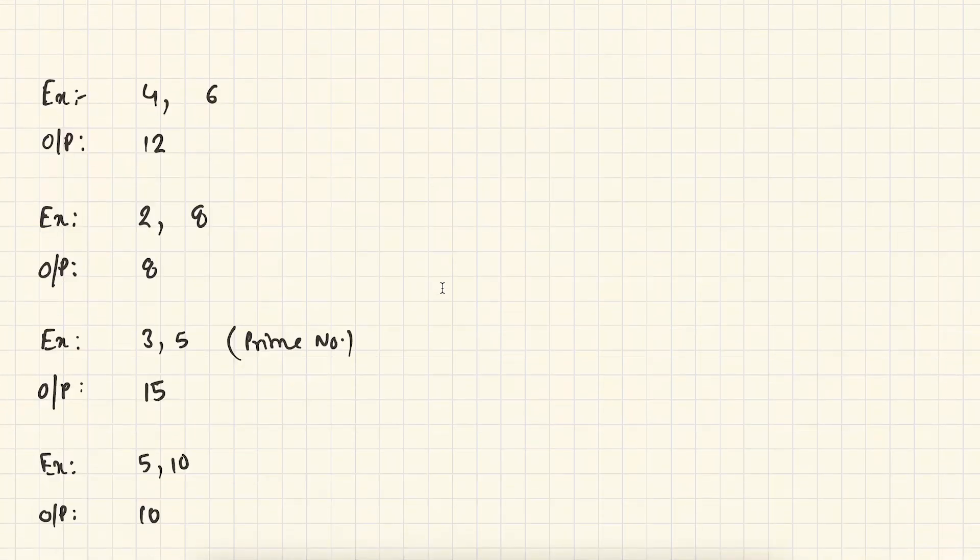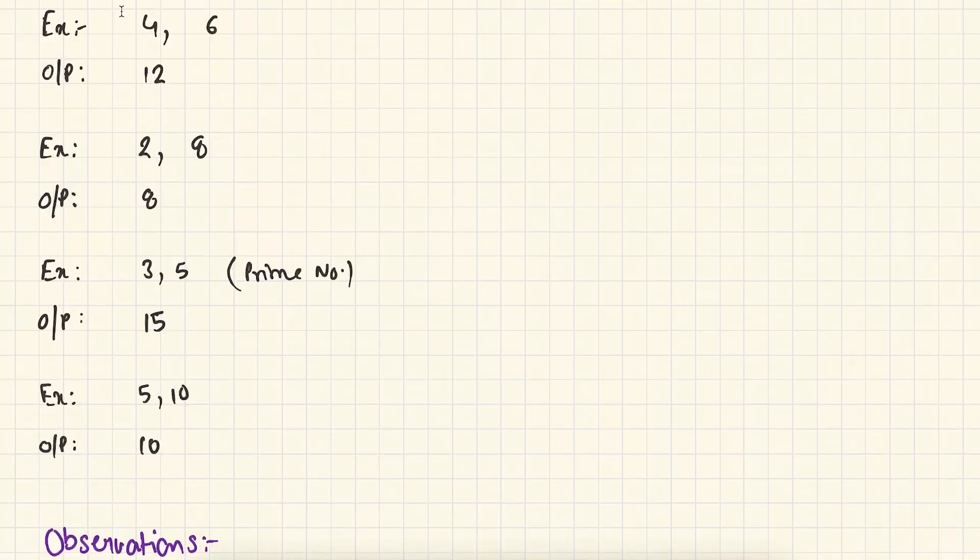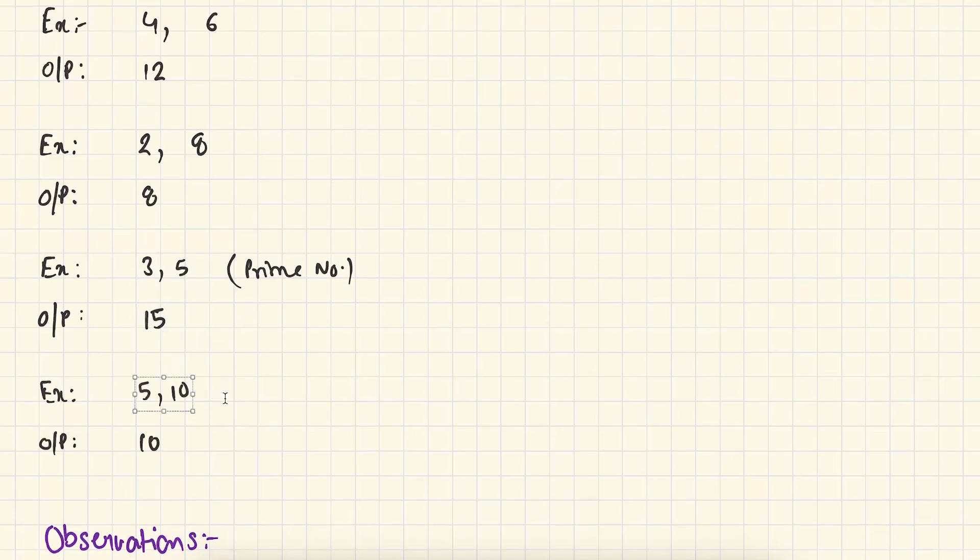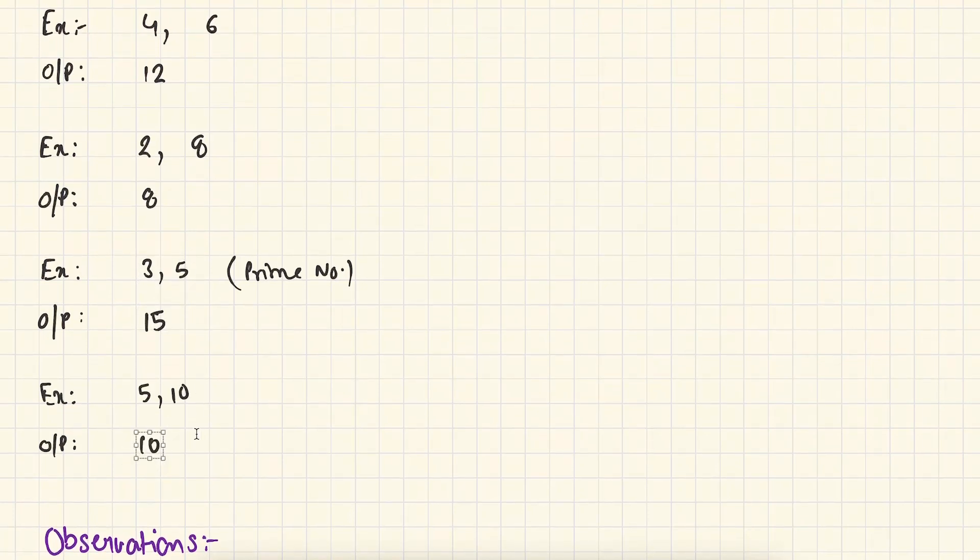Let's see a few more examples. The LCM of 4 and 6 is 12. In case of 2 and 8, the LCM is 8. In case of 3 and 5, the LCM is 15. Three and five are both prime numbers. In case of prime numbers, the LCM is simply the multiplication of two numbers. In case of 5 and 10, the LCM is 10. It means 5 divides 10 and 10 also divides 10.